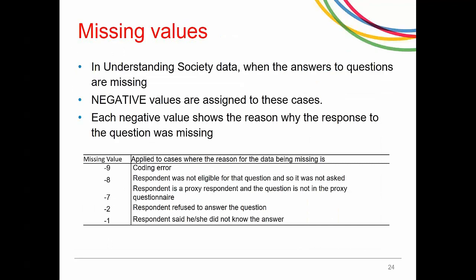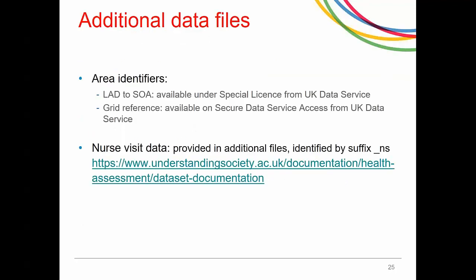Please note that in this data, missing values are assigned specific negative values which indicate why the value is missing. Here is a list of those missing values — before you start your analysis, you will need to set these values to missing. The data can also be linked with geographical-level data by making use of the different geographical indicator files that we provide.